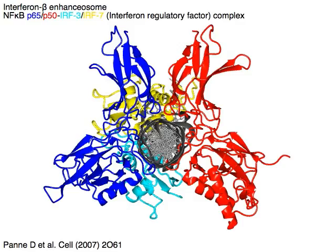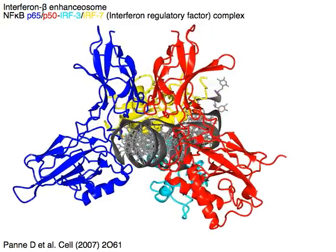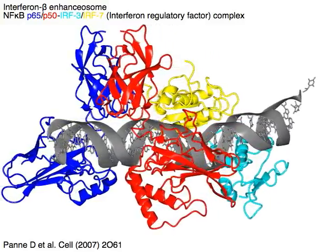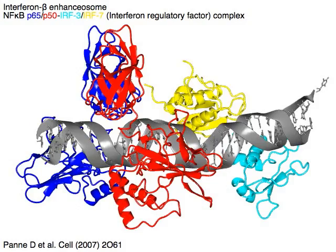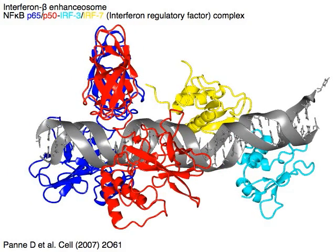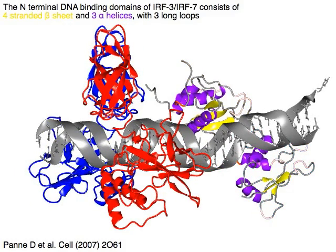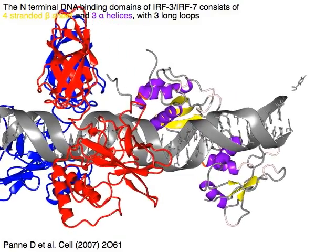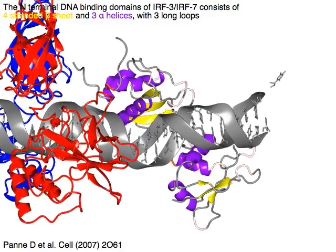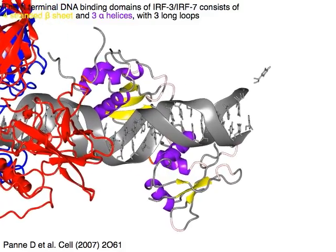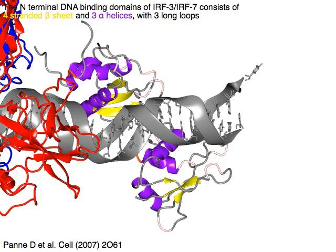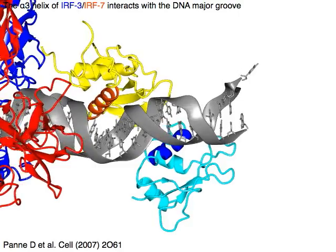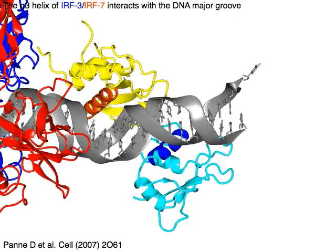Interferon beta enhanceosome: NF-Kappa B P65 in blue and P50 in red complex, and interferon regulatory factor IRF3 in cyan and IRF7 in yellow complex. The N-terminal DNA binding domains of IRF-3 and IRF-7 consist of a four-stranded beta sheet in yellow and three alpha helices in purple, with three long loops. The alpha-3 helix of IRF3 in blue and IRF7 in orange interacts with the DNA major groove.